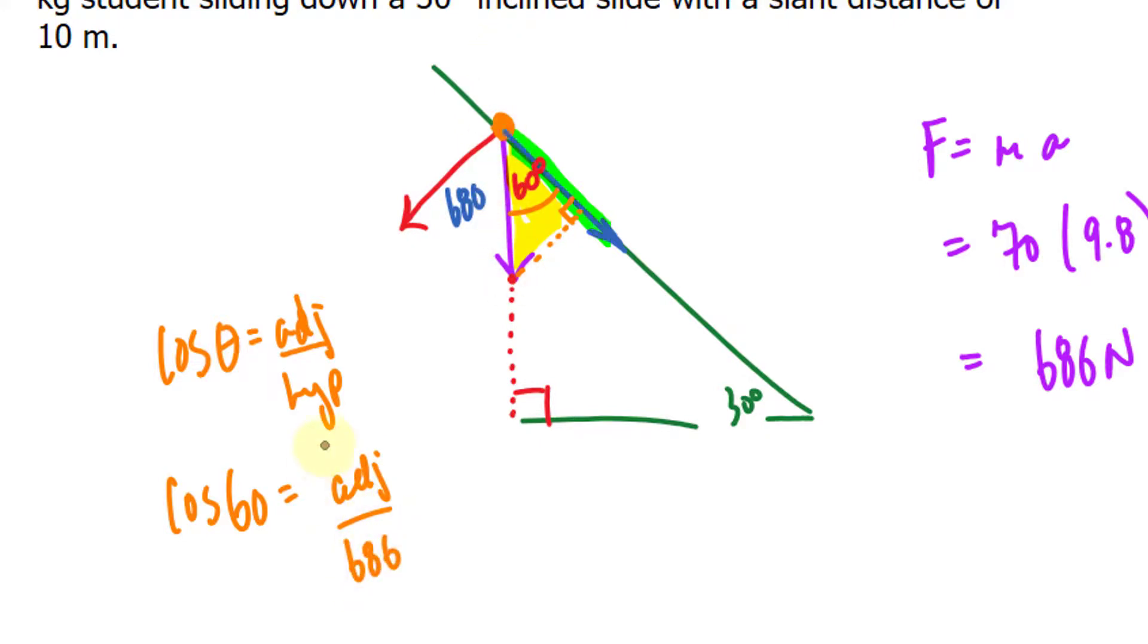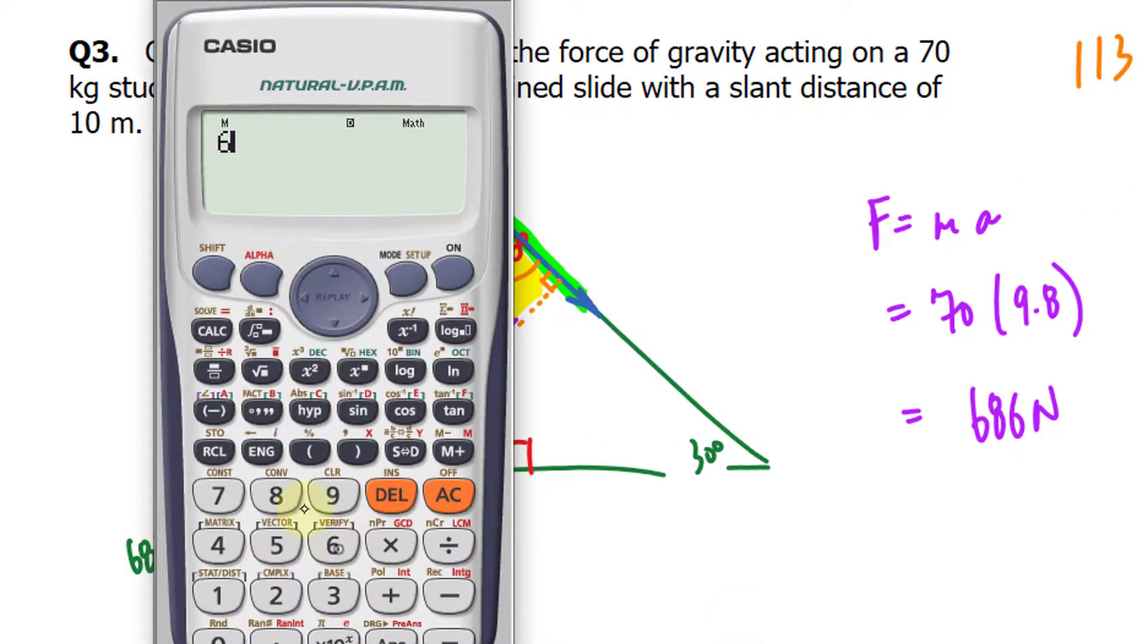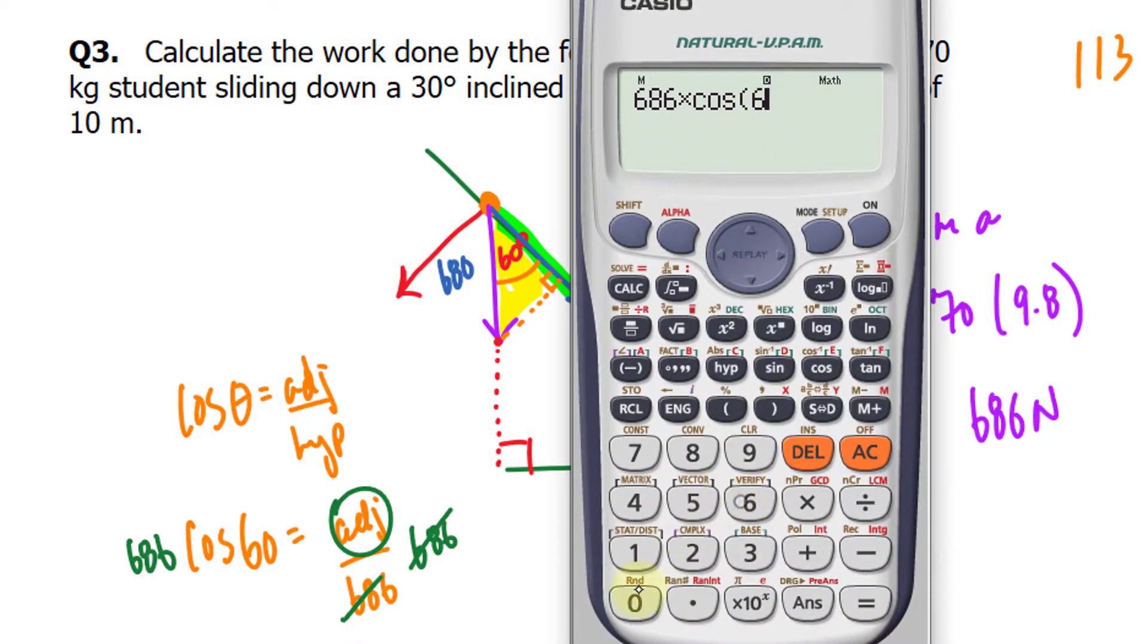Multiplying both sides by 686 to isolate for that part, those two cancel out. So taking 686 and multiplying it by cosine 60, we get 343.